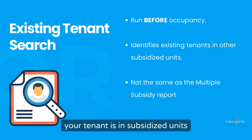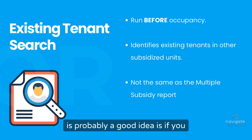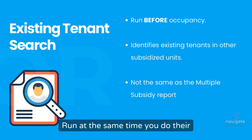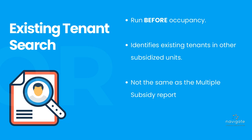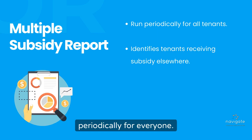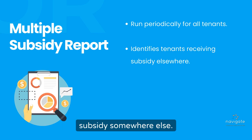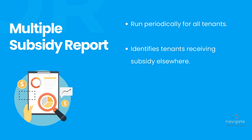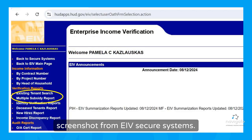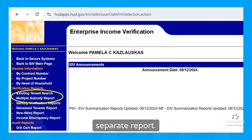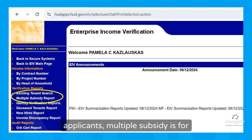It's going to identify whether or not your tenant is in subsidized units elsewhere. Probably a good idea is to not wait until that final day when they're signing to run it — run it as part of your screening, the same time you do their background check and references. The multiple subsidy report is one of those reports you're running periodically for everyone. That's going to tell you whether one of your tenants is getting a new subsidy somewhere else after they've moved into your property. Looking at this screenshot from EIV Secure Systems: existing tenant search is one of the reports, and multiple subsidy is a separate report. So existing tenant search is for applicants; multiple subsidy is for tenants.